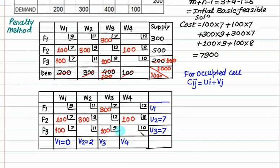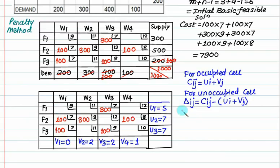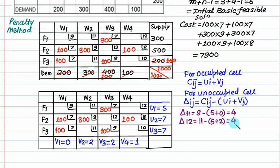Continuing: another occupied cell has cost 9, row value 7, giving column value 2. Next cell cost 7, column value 5, so 5+2=7. Then cost 8, row value 7, column value 1, since 7+1=8. For an unoccupied cell with cost 11, row value 5, column value 0: delta = 11 - (5+0) = 6. Cell with cost 11, row value 5, column value 2: delta = 11 - 7 = 4. Cell with cost 11, row value 7, column value 2: delta = 11 - 9 = 2.